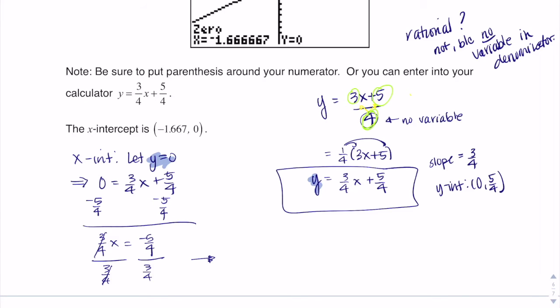So this cancels out, and if I scooch along here, I'm going to have x is equal to negative 5/4 divided by 3/4, which is like saying negative 5/4 times the reciprocal 4/3. These cancel out, and I get negative 5/3. And that decimal is negative 1.667.